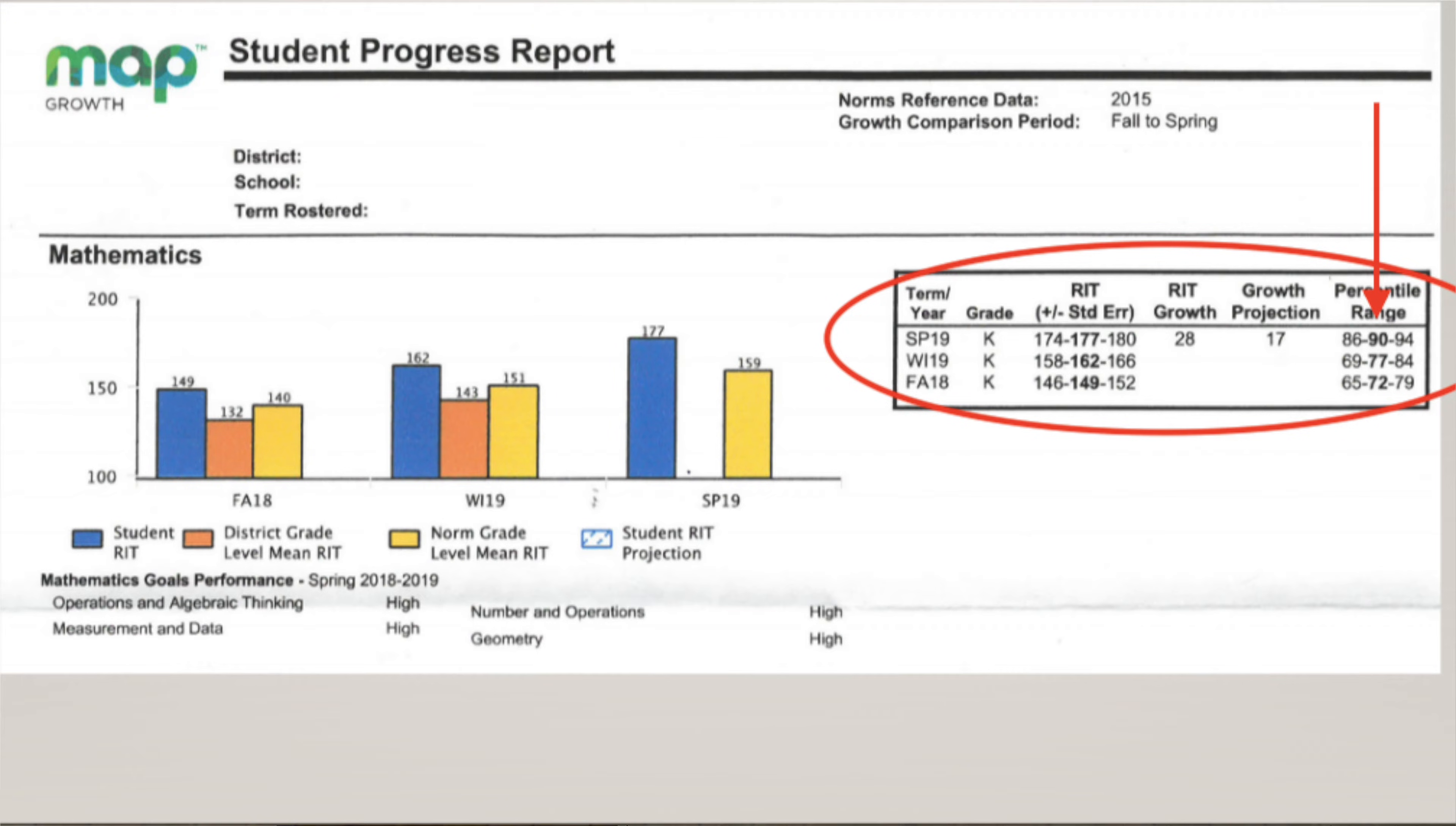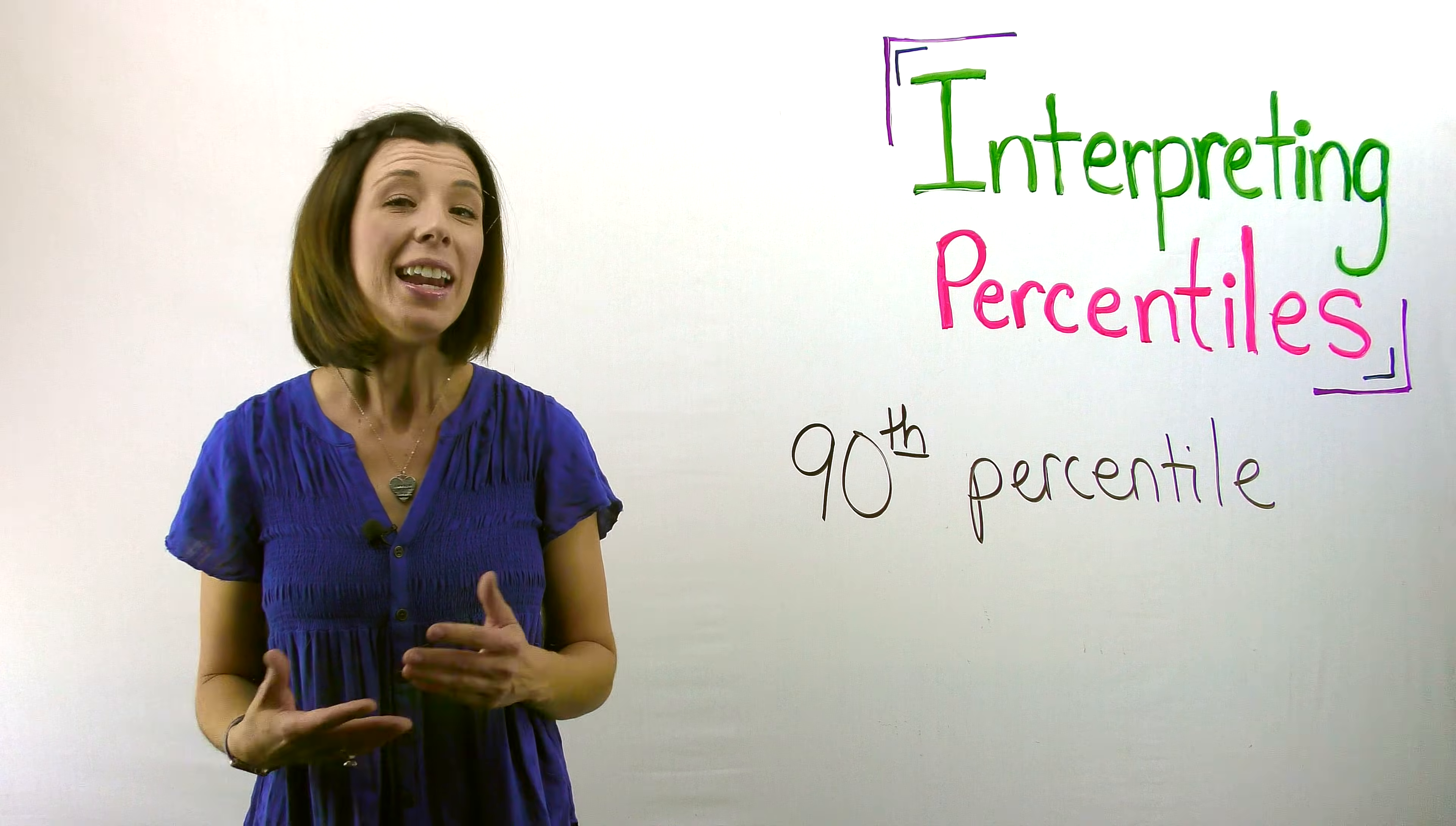So if I look at this very top one for spring 19, it says that I've got 86 for the low end of the range, 94 for the high end, and the student is scoring in the 90th percentile.